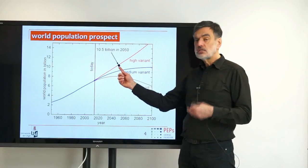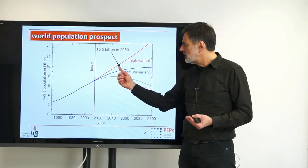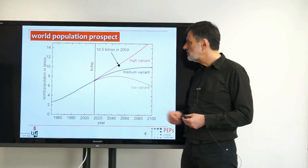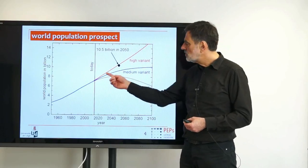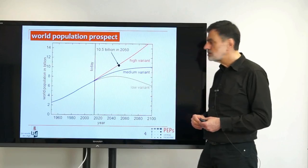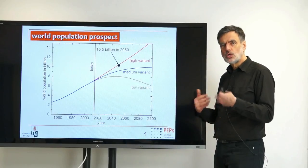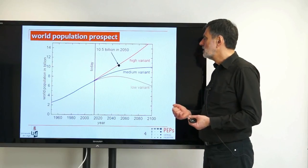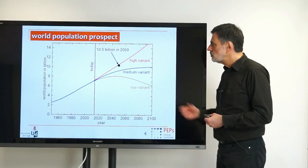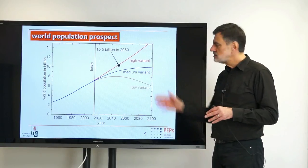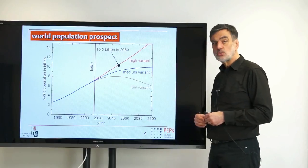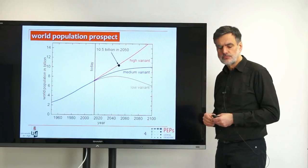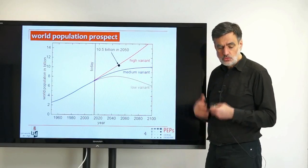That means the high population variant is quite probable — which is of course quite negative, because it means world population is continually increasing, putting more and more pressure on all the resources we are using. I therefore used the high variant as my base case for the scenario analysis, with the other variants included for comparison.